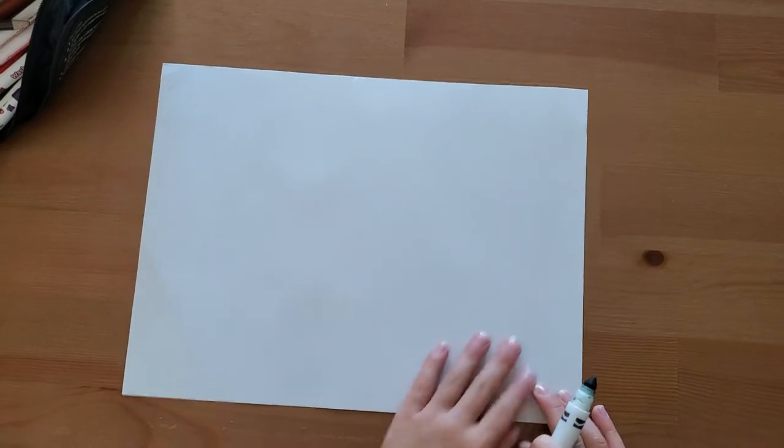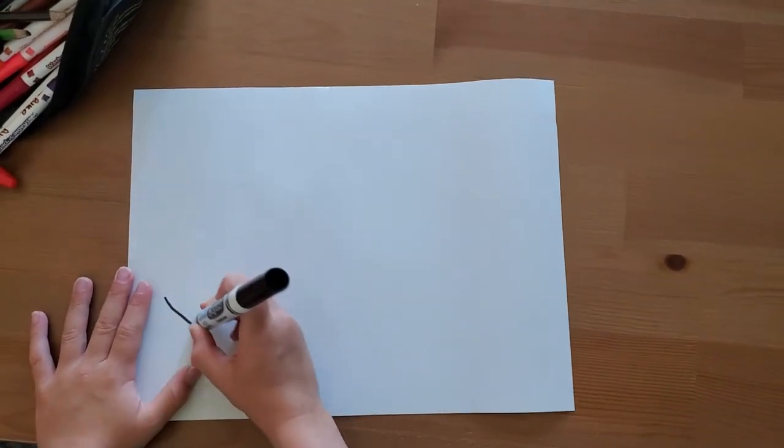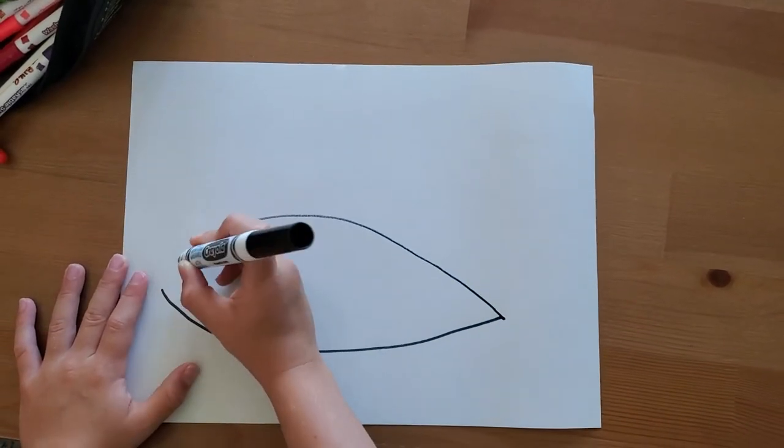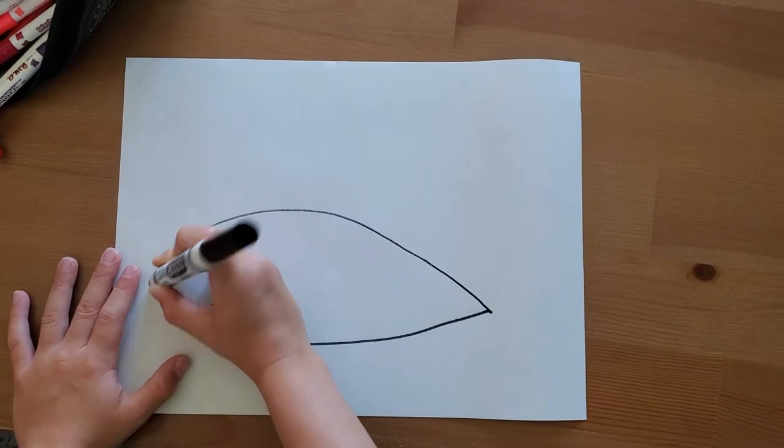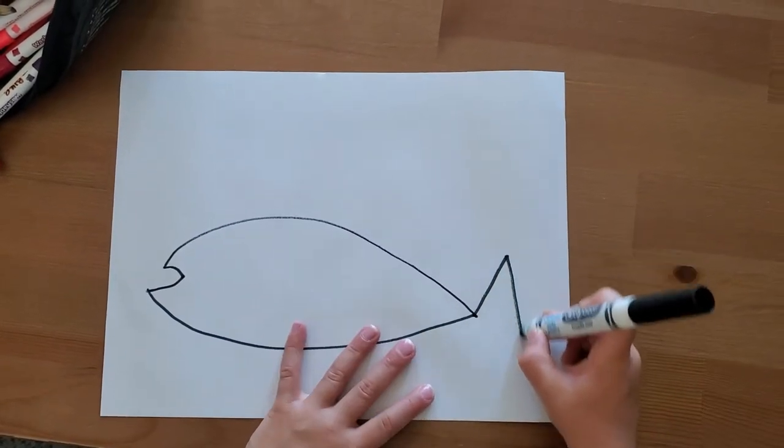Today we're going to draw a rainbow trout. So first we're going to have to do this. That's the front and then the back.